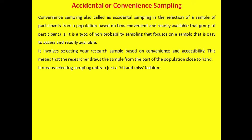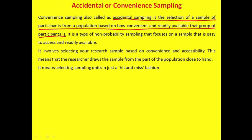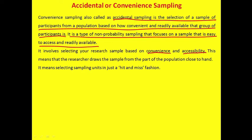Accidental or convenience sampling is the selection of a sample based on how convenient and readily available participants are. It focuses on a sample that is easy to access and involves selecting research participants based on convenience and accessibility. The researcher draws the sample from the part of the population closest to hand — selecting units in a hit-and-miss fashion.